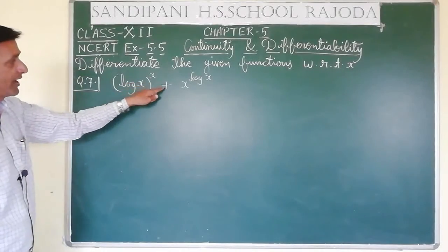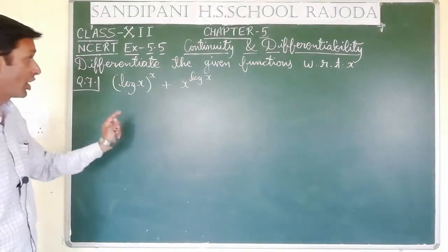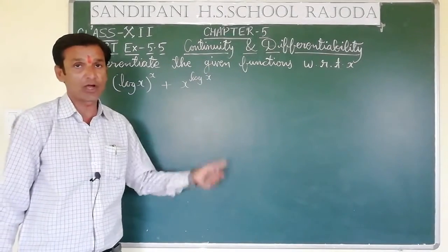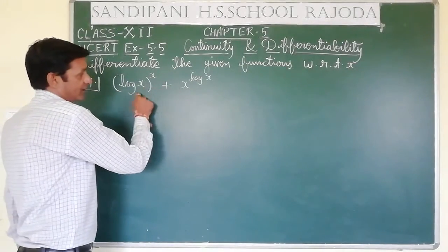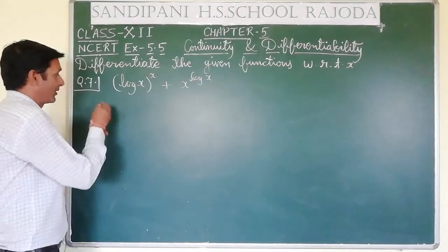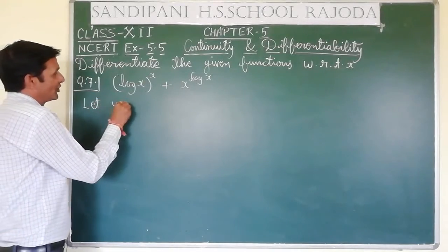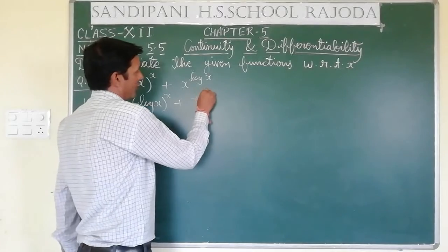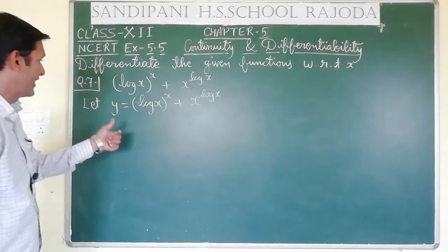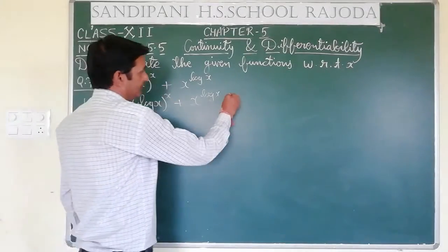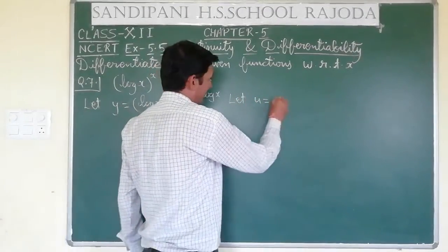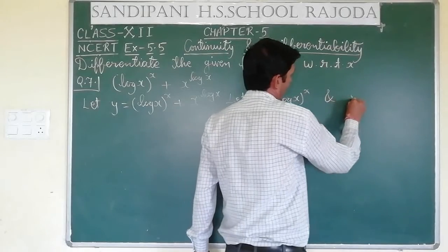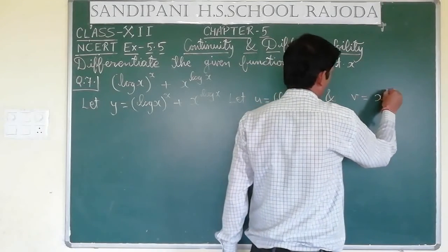The question is: log x raised to the power x, plus x raised to the power log x. Here we use logarithmic differentiation and substitution. The substitution we need to do here is logarithmic substitution. Let y equal to log x raised to the power x, plus x raised to the power log x. Let u equal to log x raised to the power x, and v equal to x raised to the power log x.